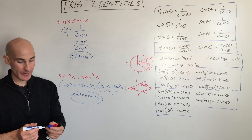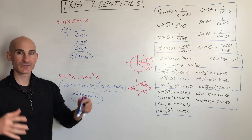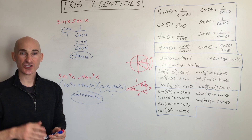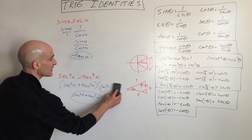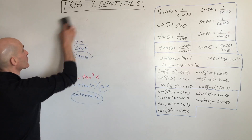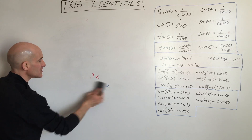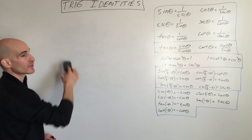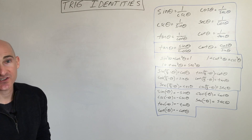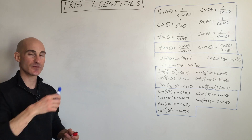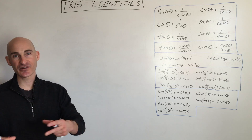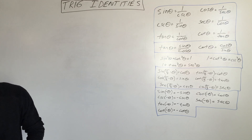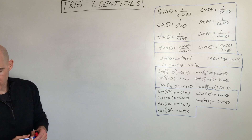Those are a couple of examples of simplifying trig expressions. Now let's talk about verifying trigonometric identities. These problems can seem difficult at first because they're unfamiliar, but just think of it like algebra — you'll be factoring, working with fractions, finding common denominators, combining like terms, and so on.